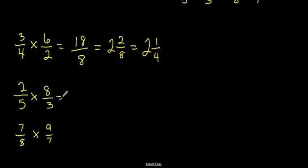Next one is 2 times 8 is 16, and 5 times 3 is 15, and how many sets of 15 go into 16? Well, that's pretty easy. 1. And that means that there's 1 left over, and we keep the denominators the same. So it's 1 and 1 15th.